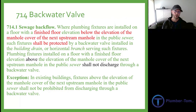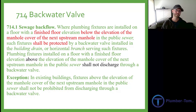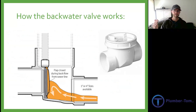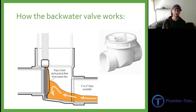Section 714 covers backwater valves. 714.1 says where plumbing fixtures are installed on a floor with a finished floor elevation below the elevation of the manhole cover of the next upstream manhole in the public sewer, such fixtures shall be protected by a backwater valve installed in the building drain or the horizontal branch serving those fixtures. A backwater valve has a simple flap inside that allows fluids to flow in the correct direction — from the drains out to the sewer — but if the sewer backs up the flap closes and keeps the house from filling with sewer. Some people love these because they've saved their basements from massive sewage floods; some hate them because they can cause clogs and blockages that may also flood the basement.